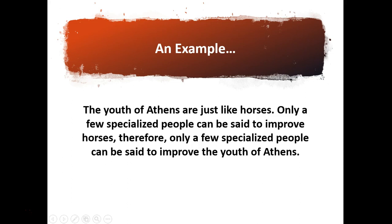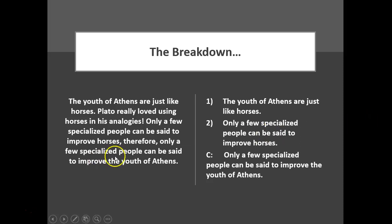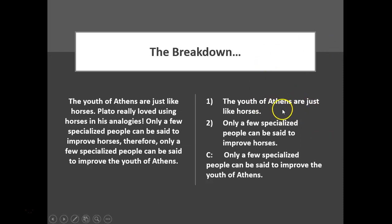The youth of Athens are just like horses. Only a few specialized people can be said to improve horses. Therefore, only a few specialized people can be said to improve the youth of Athens. This is an example from Plato's The Apology. The conclusion — with the indicator 'therefore' — is: only a few specialized people can be said to improve the youth of Athens. The premises: the youth of Athens are just like horses, and only a few specialized people can be said to improve horses. Since the youth of Athens have so much in common with horses, apparently, you can draw this conclusion.